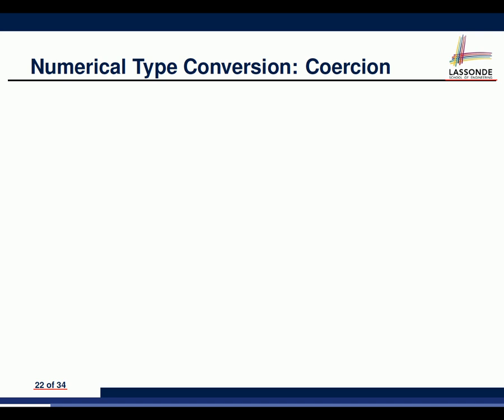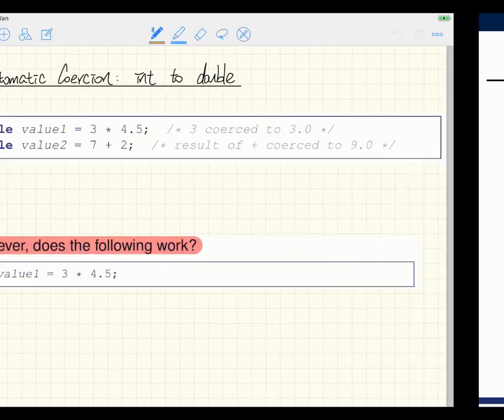There are two terms you have to know. One is called coercion, the other is called cast. The key distinction: coercion is done for you automatically at runtime. Cast is something you have to do manually by yourself — if you didn't do it, it's going to be a compilation error. Let's talk about coercion first, since it will be done automatically.